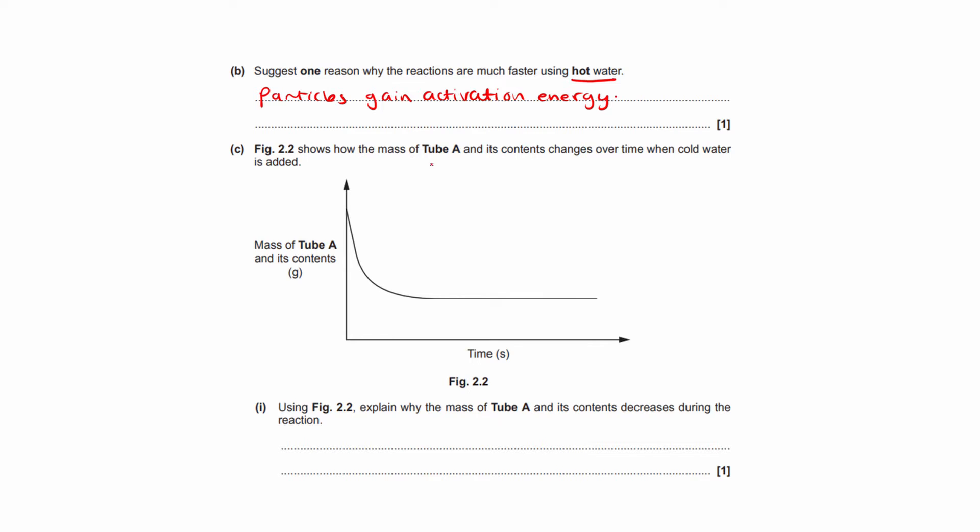Okay, part C. Figure 2.2 shows how the mass of tube A and its contents changes over time when cold water is added. Okay, so the contents are what's inside the test tube. So mass of tube A and its contents in grams, time in seconds. Okay, so this is the graph. So using figure 2.2, explain why the mass of tube A and its content decreases during the reaction. So whatever was in tube A, so let's say this is tube A, there's a tablet and there's water. So we call them the reactants. Okay, they're the things we start off with. The reactants in a reaction produce products. Now because in this reaction we have fizzing happening, this indicates that a gas is being produced. So one of the products is actually a gas and that just escapes into the air. So it doesn't stay inside, it escapes as a gas. Okay, that's why there's fizzing. So that's why the mass decreases. It's because one of the products actually leaves the test tube and you have less content left. Because there is fizzing, a gas is given off.